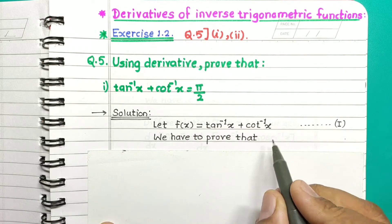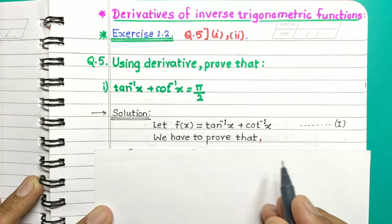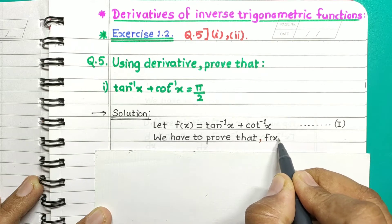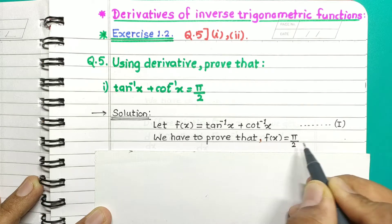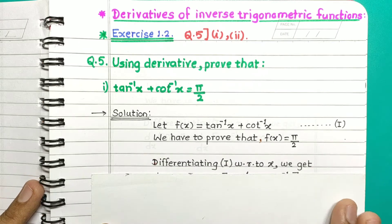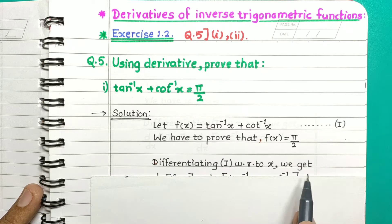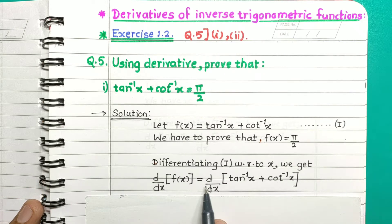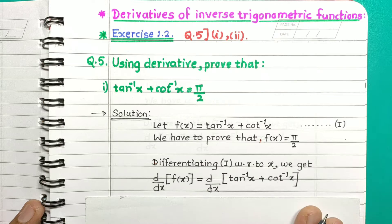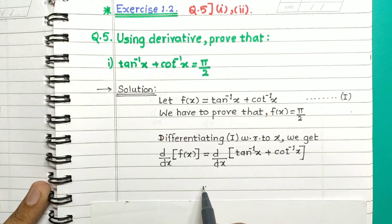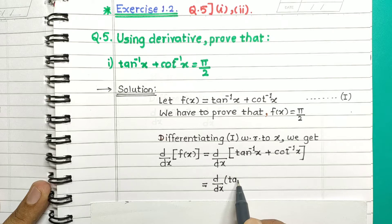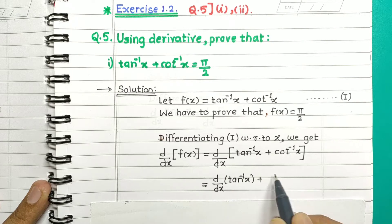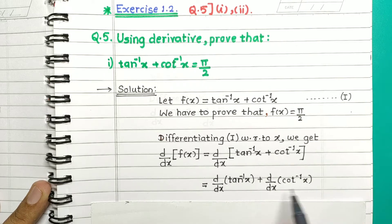We have to prove that f of x is equal to pi by 2. So, differentiating this equation 1, we get d by dx of f of x is equal to d by dx of tan inverse of x plus cot inverse of x. We can write this as d by dx of tan inverse of x plus d by dx of cot inverse of x.